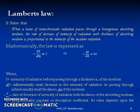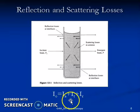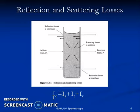Understanding what happens to incident radiation is important for studying Beer-Lambert's law. The intensity of the incident radiation equals the sum of intensities absorbed, transmitted, and reflected as light passes through a system holding a sample. We will speak more about the fate of incident radiation when discussing Beer-Lambert's law, an important application of UV-visible spectroscopy.